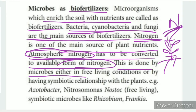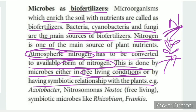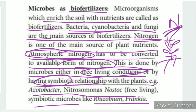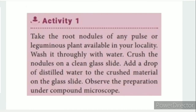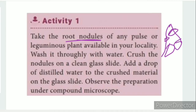Nitrogen fixation is done by microbes either in free-living conditions or by having a symbiotic relationship with the plant. Examples of free-living nitrogen fixers include Azotobacter, Nitrosomonas, and Nostoc. The symbiotic method involves Rhizobium and Frankia. Take the root nodules of any pulse or leguminous plant available in your locality — root nodules are prominently visible there.